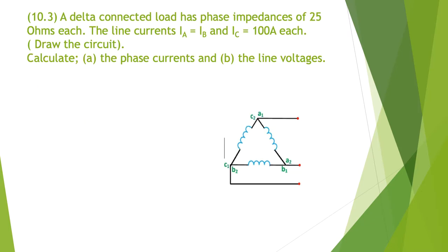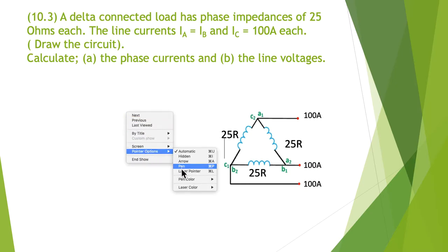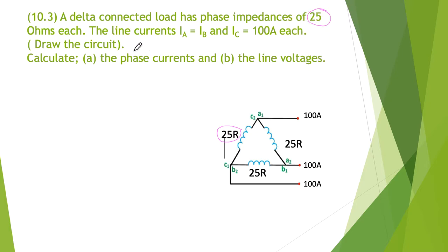10.3. A delta connected load has a phase impedance of 25 ohms in each phase. The line current IA equals IB and IC is 100 amps. Draw the circuit. Calculate the phase currents and the line voltages. So first thing we need to do is make sure we label the diagram. And we know the impedance of each of these is 25 ohms.